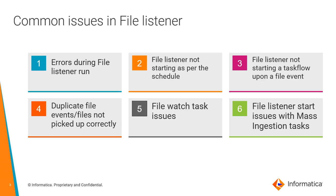The fifth issue is file watch task issues. The file watch task is a component in a task flow which uses a file listener — if there are any issues with file watch tasks, that comes under issue five. The sixth one is file listener start issues with mass ingestion tasks. Similar to issue three, file listeners can also be used as a start event or source for a mass ingestion task, as well as under a B2B gateway task — all of this comes under issue six.